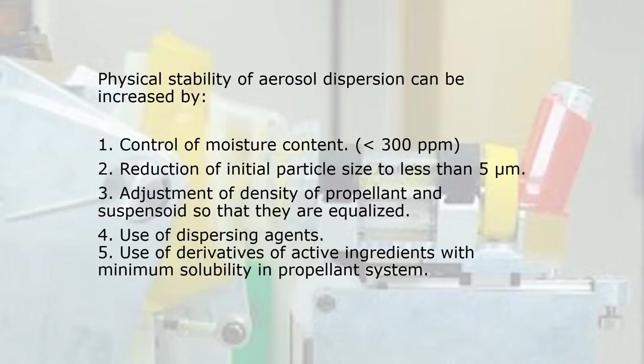Physical stability of aerosol dispersion can be increased by: control of moisture content to less than 300 parts per million, reduction of initial particle size to less than 5 micrometers, adjustment of density of propellant and suspensoid so they are equalized, use of dispersing agents, and use of derivatives of active ingredients with minimum solubility in the propellant system.